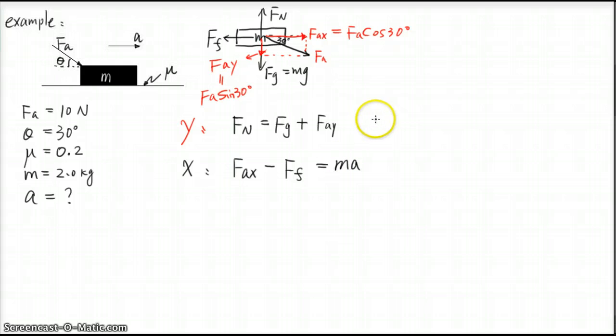So here we can all plug in all the numbers. So this one is going to be Fn equals mg plus Fa sine 30 degrees. And then here, and also if you know the Fn, the Ff is going to be mu times Fn. So that means the Ff is going to be mu times mg plus Fa sine 30.